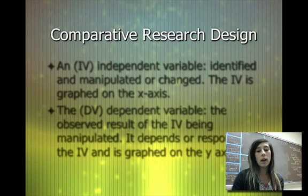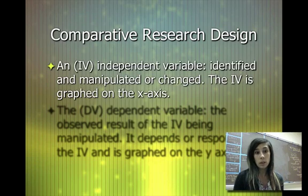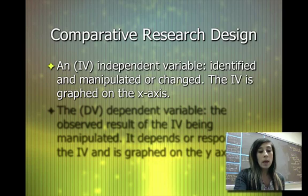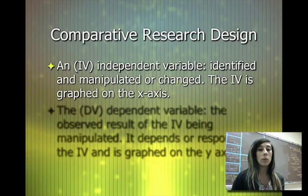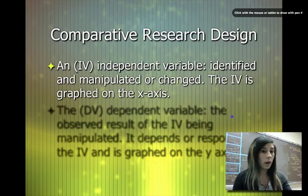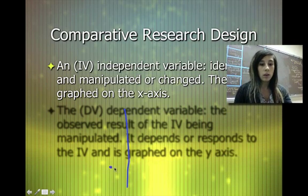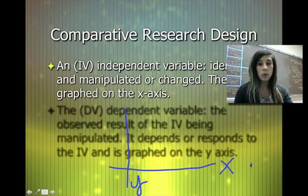In comparative research design as well as experimental research design, we start to see different variables. The independent variable is something that is manipulated or changed, and it's independent of the results you see in your experiment. When we graph this, we put it on the x-axis. So x is the horizontal axis, and y is the vertical axis — we put the independent variable on the x-axis.